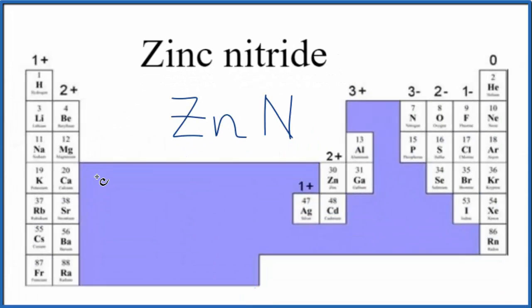So zinc is in here with the transition metals, but zinc's kind of special. Zinc always has an ionic charge of 2+. So we're going to put a 2+ up here for the zinc. Nitrogen is over here with phosphorus, group 15, sometimes called 5A. That's 3-. So we have the ionic charge for each element here in zinc nitride.